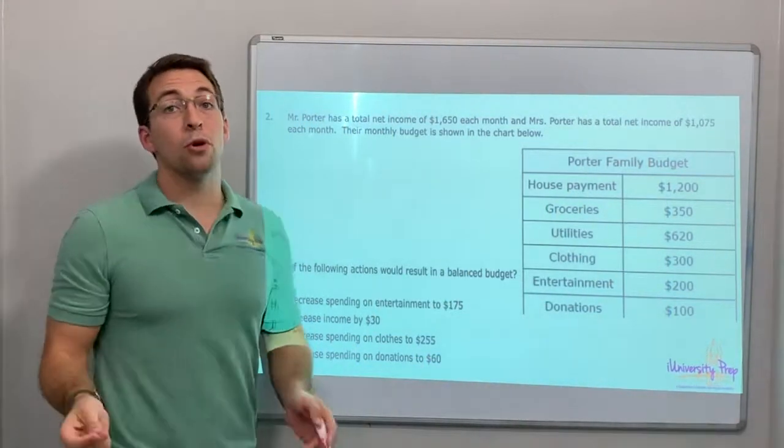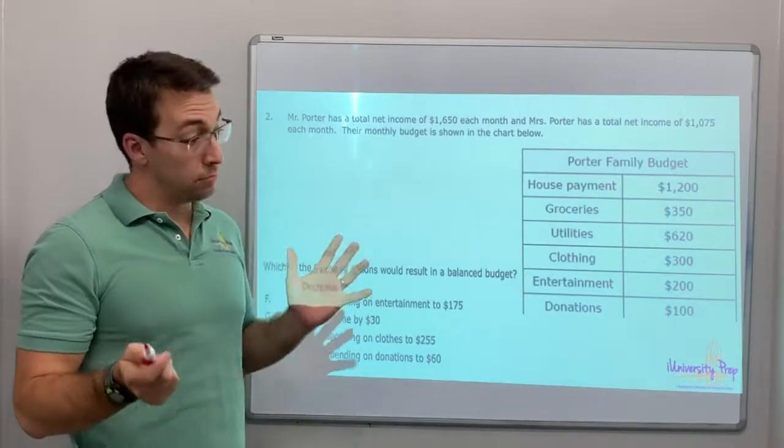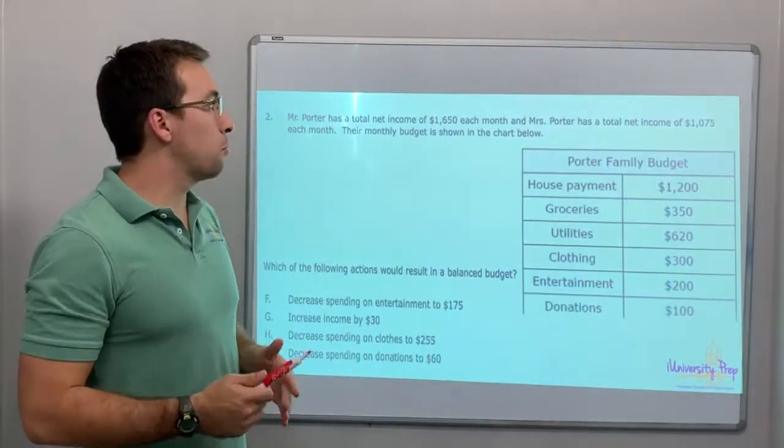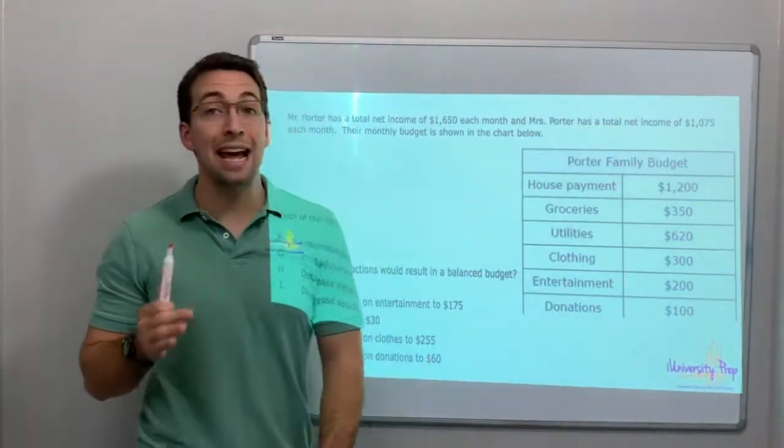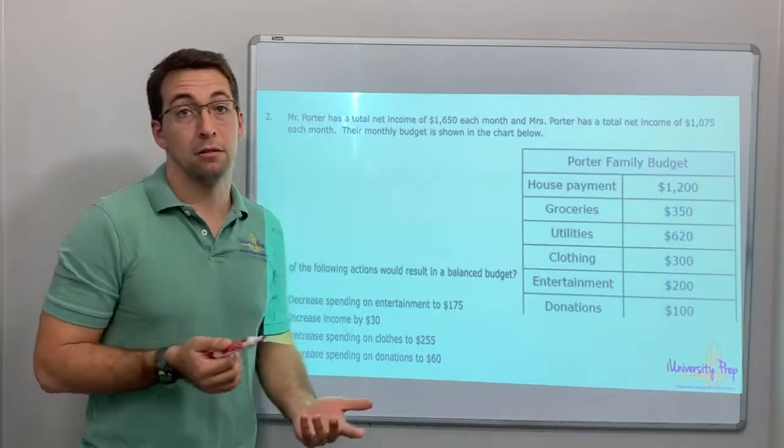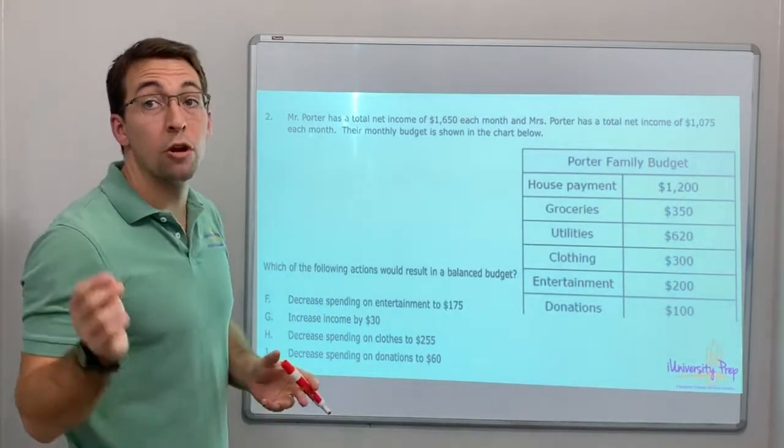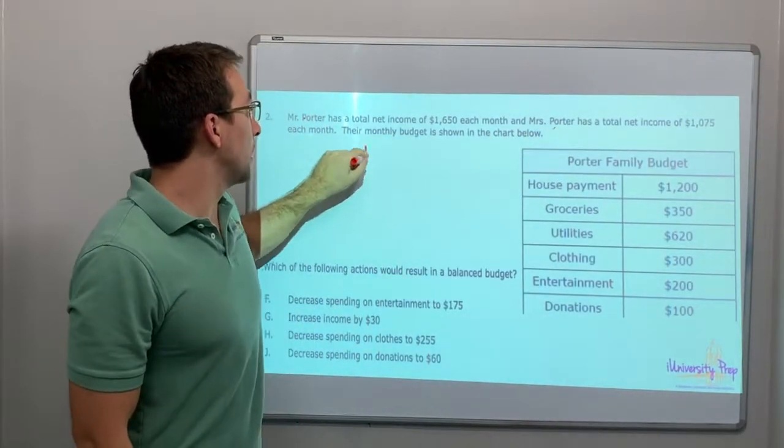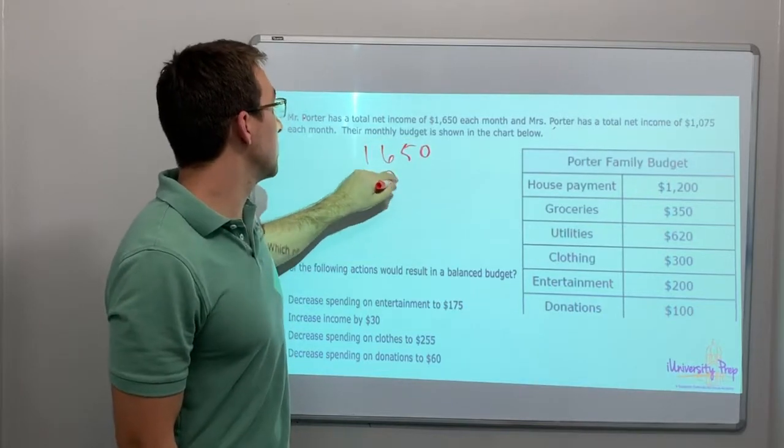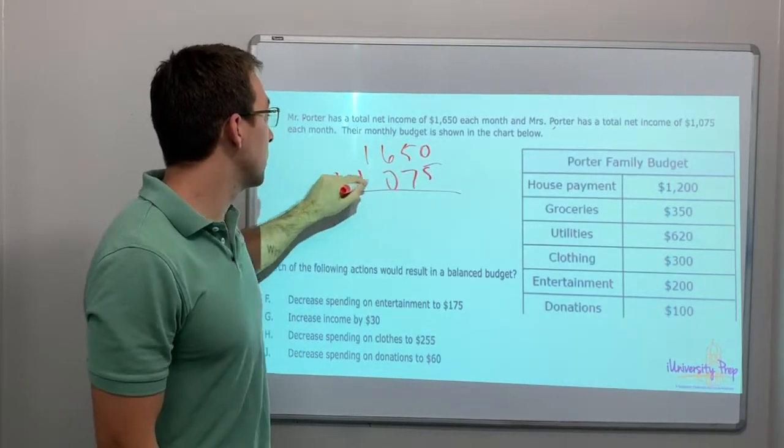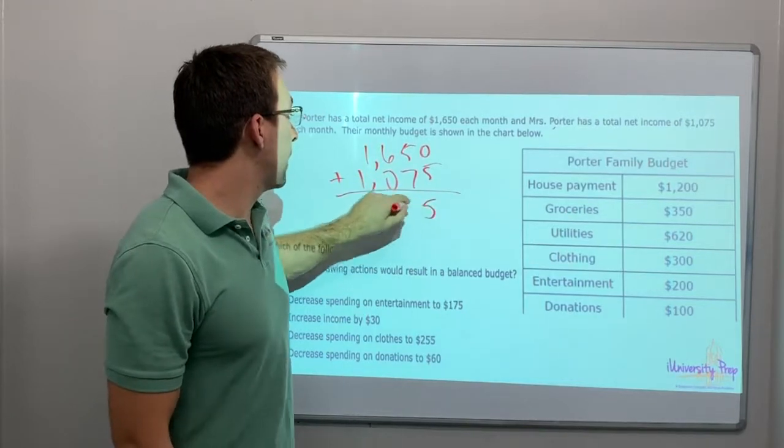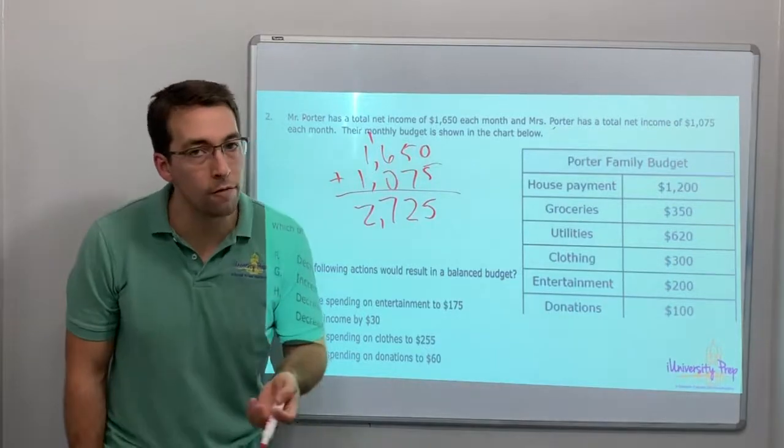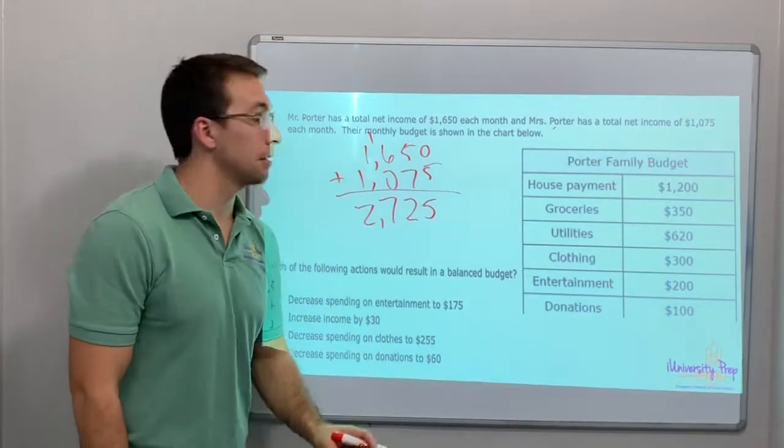Mr. Porter has a total net income – that's after deductions – of $1,650 each month. Mrs. Porter has a net income of $1,075. Their monthly budget is shown below. So what is that total? Mr. and Mrs. Porter: $1,650 plus $1,075. We're going to add those together. $2,725. That's their budget after taxes.